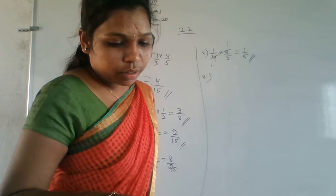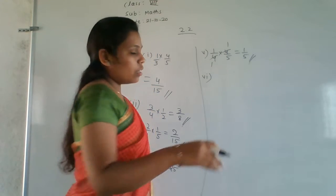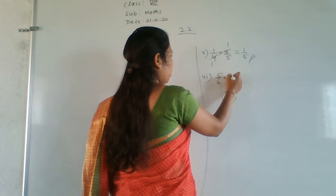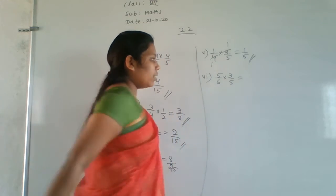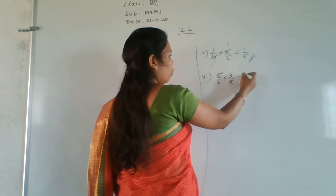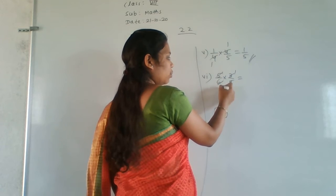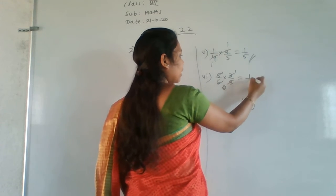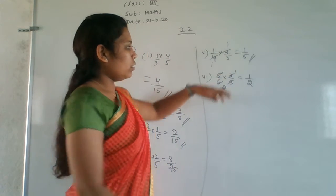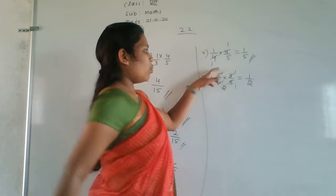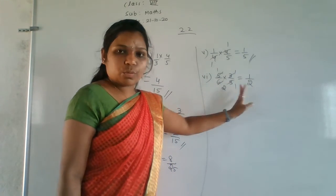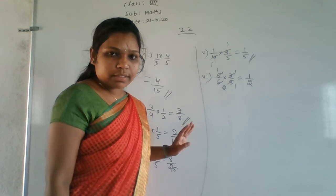Sixth question: 5/6 × 3/5. We can cancel the 5s — 5 and 5 cancel. Then 3 and 6: 3 ones are 3, and 2 ones are 2. So the answer is 1/2.